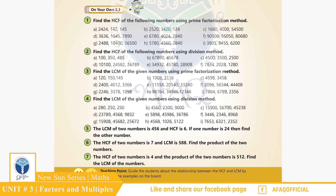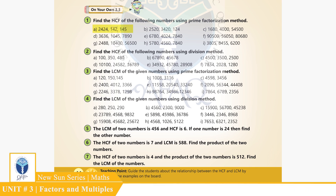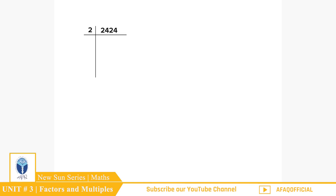Question 1: Find the HCF of the following numbers using prime factorization method. Part (a): 2424, 142, and 145. First, we find the prime factors of 2424.